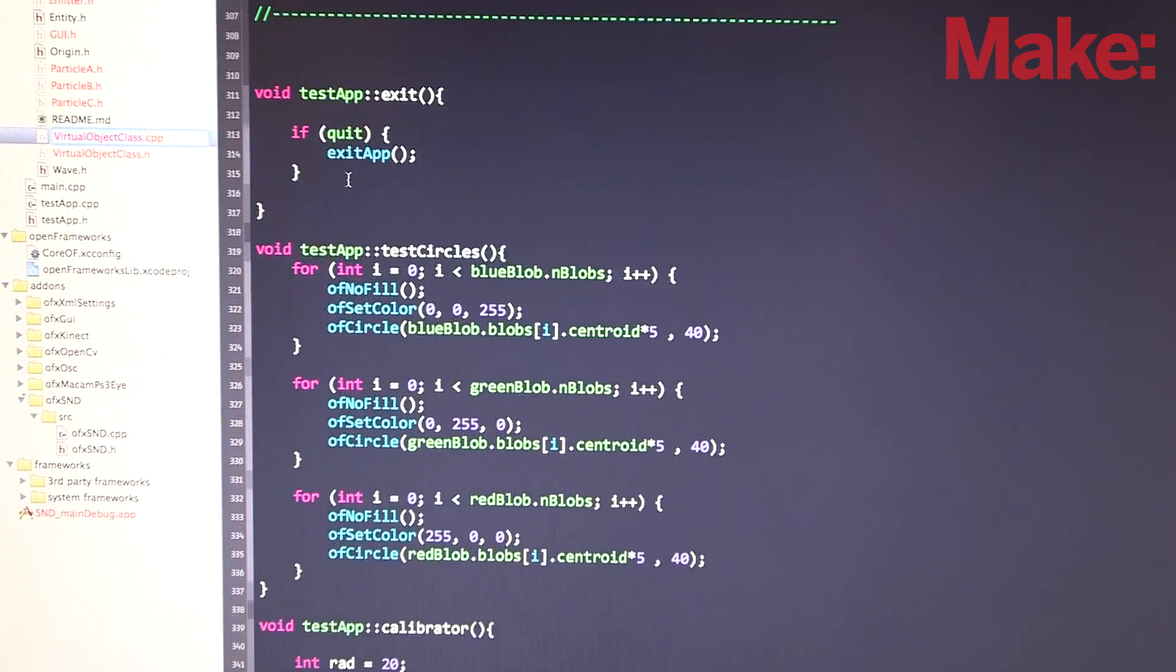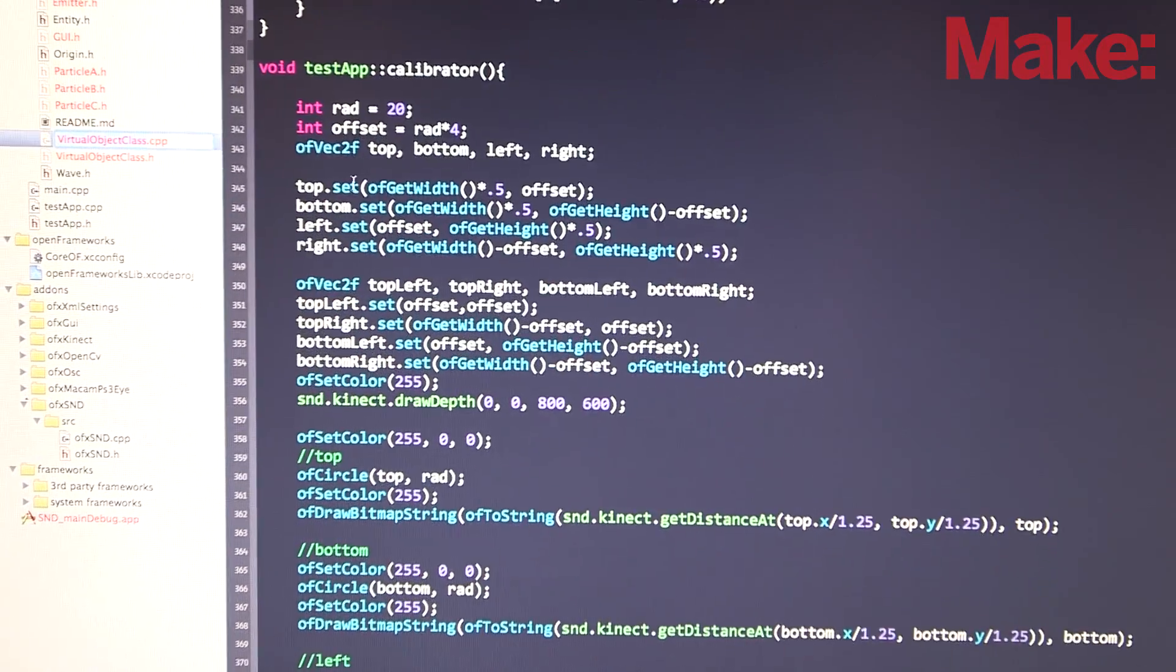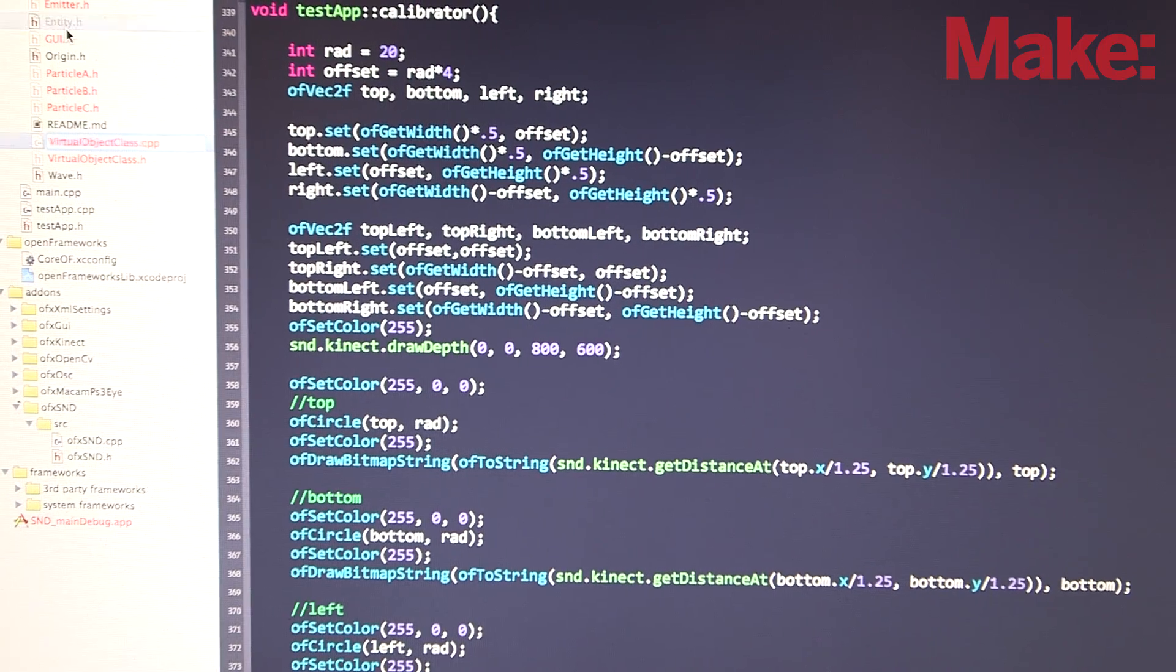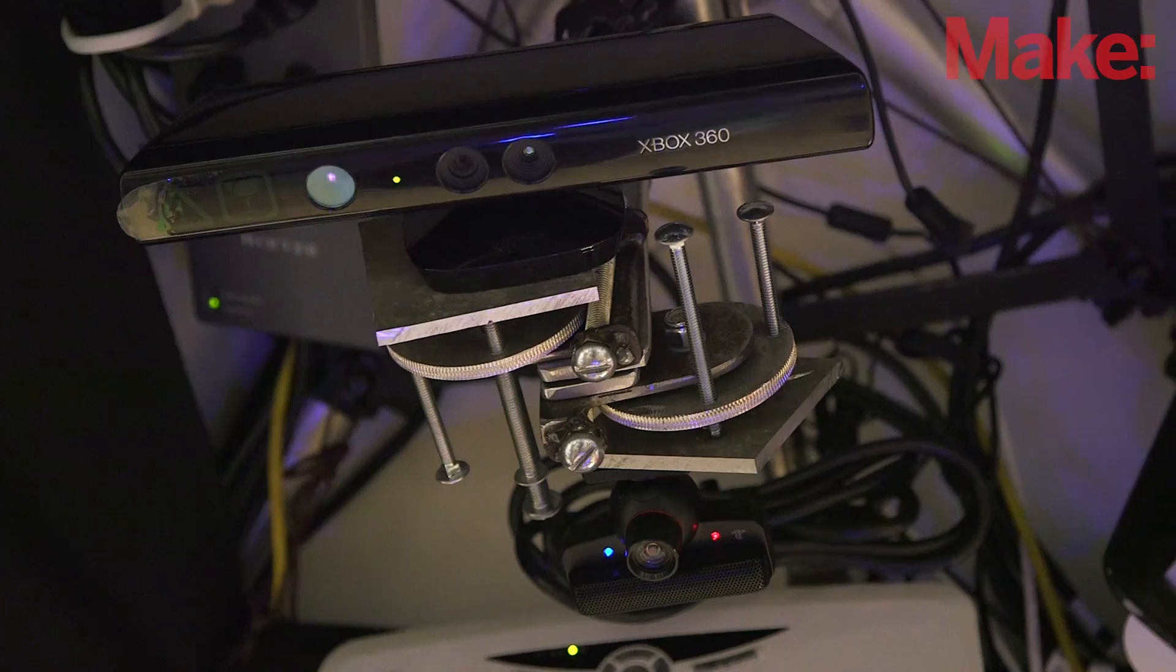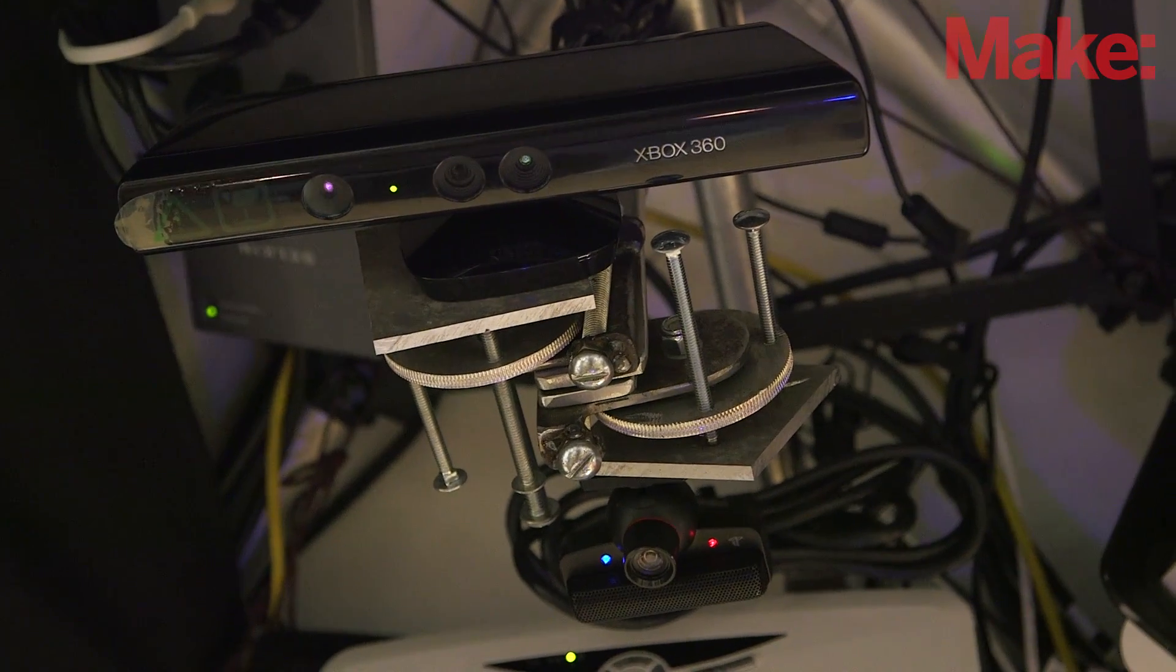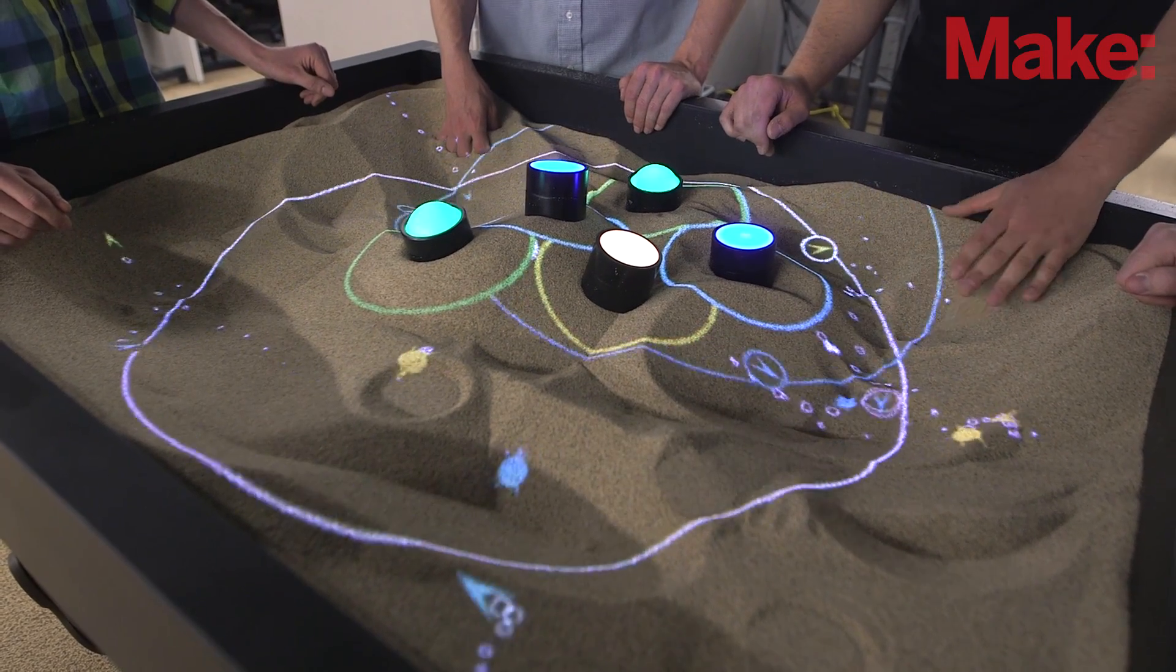So we're taking readings from our color camera and our depth camera and essentially reading into big arrays full of pixels.